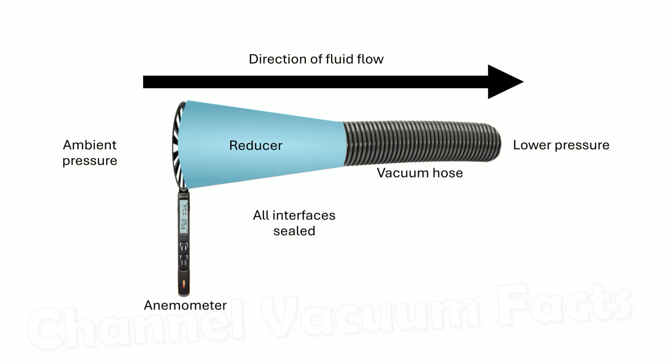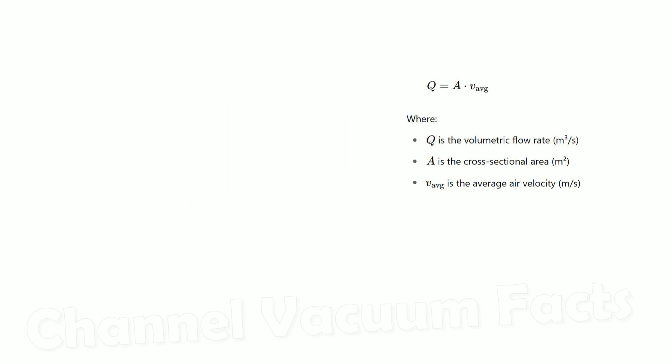A vane anemometer measures the local air velocity based on a factory calibration from the resulting fan rotation speed, and then calculates the volumetric flow rate using this simple internal formula.